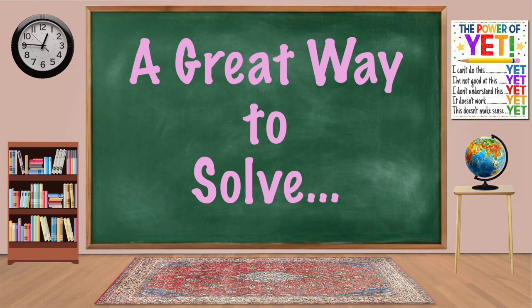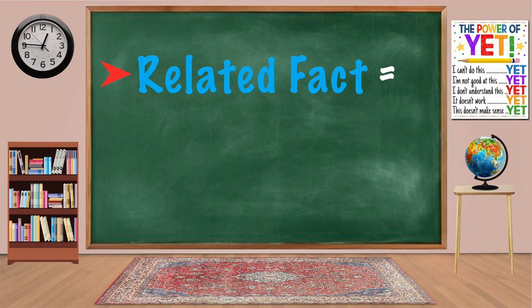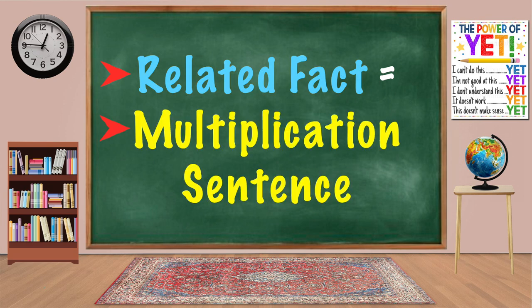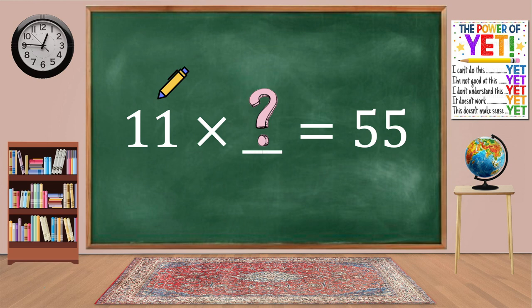A great way to solve a division problem would be to use a related fact and an array. A related fact would be a multiplication sentence. So here's our division sentence: 55 divided by 11 equals what? A related fact is 11 times what equals 55.